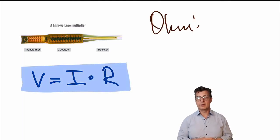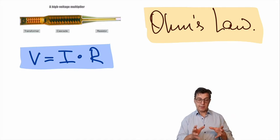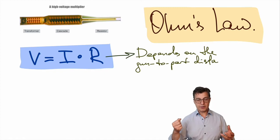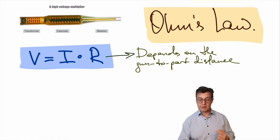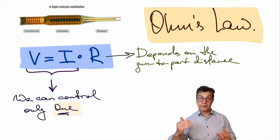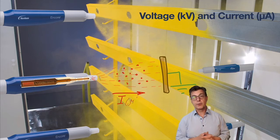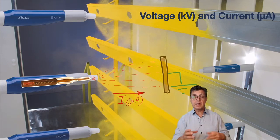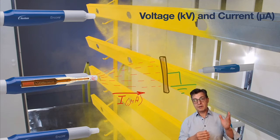Ohm's law was first published and discovered in 1827 by a German scientist, Georg Ohm. The resistance is primarily the resistance of the air gap between the gun and the part, which we really cannot control — we can only keep the gun at a fixed gun-to-part distance. So if we were to control the electrostatic parameters of voltage and current, we can control only one; the second one needs to be allowed to fluctuate. Once we've applied sufficient voltage and created sufficiently strong electric field for the development of corona discharge, it's the flow of these charges from the gun to the part which is the current. The current is the only direct measure of how much charge is created and passed from the gun to the product.